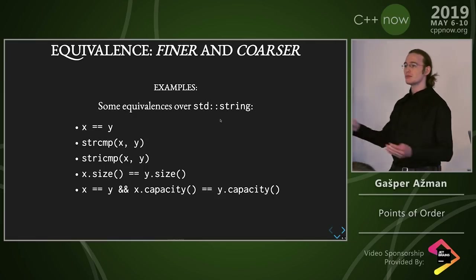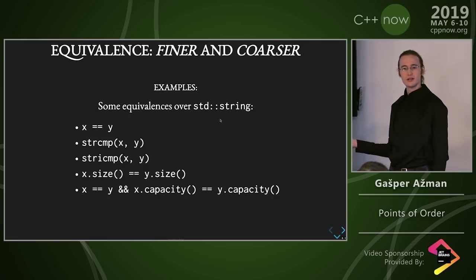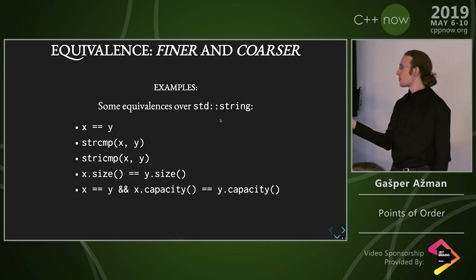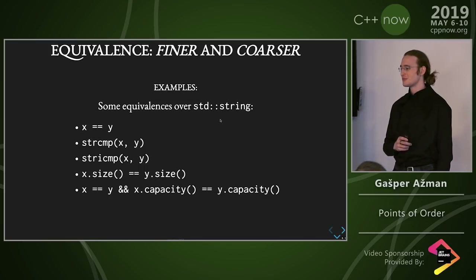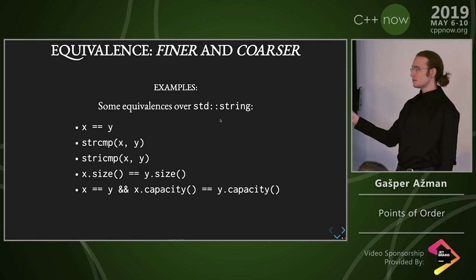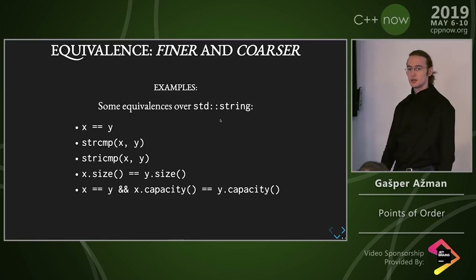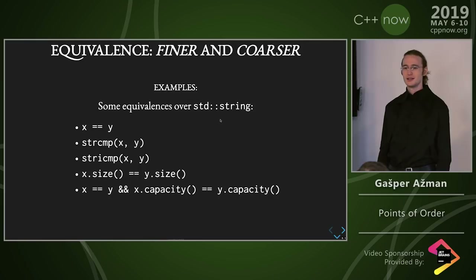Here's another example — some possible equivalences over std::string. An equality is an equivalence; it's not a particularly interesting one if you're asking about equivalences, but it's the most useful one — that's why it's the equality. strcmp is also an equality over strings. You could also just compare by size — and that's a perfectly legitimate thing in certain contexts; it becomes isomorphic to a positive integer class. It has a different datum.